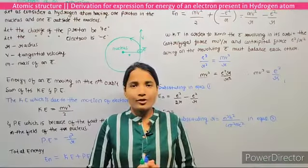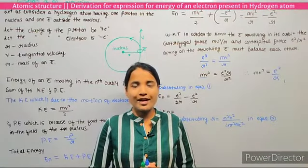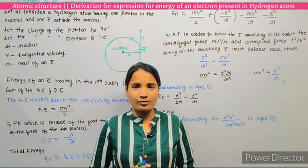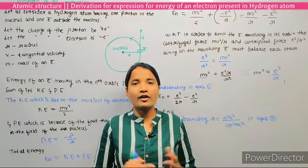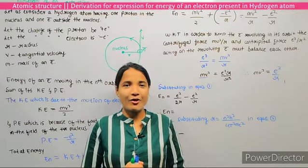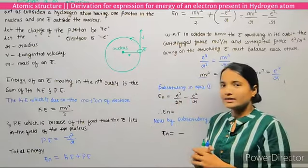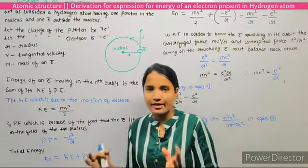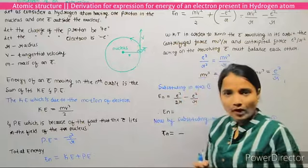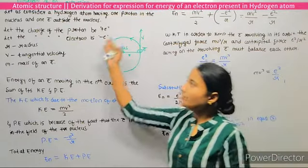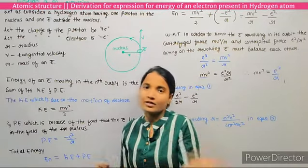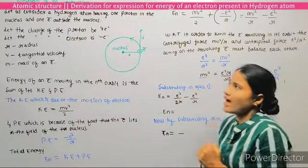Hi everyone. Here I am going to derive one very important derivation — the derivation of an expression for energy of an electron present in the hydrogen atom. In my previous class we already derived the radius of the hydrogen atom. To derive this equation, we must consider the hydrogen atom having one proton inside the nucleus and one electron outside the nucleus.